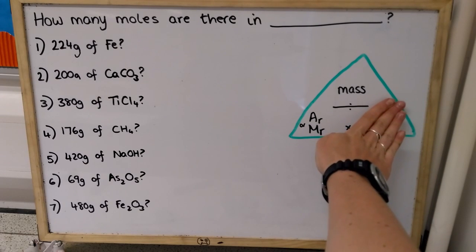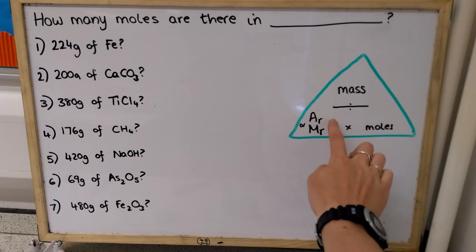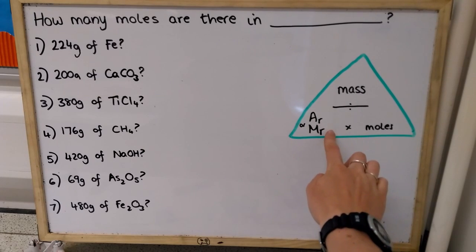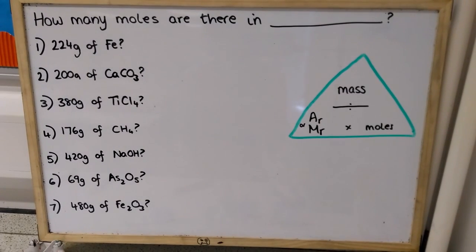And my formula triangle tells me I'm going to do mass divided by either AR, if we're looking at an element, or MR, formula mass, if we're looking at a compound.